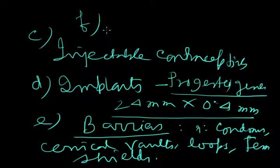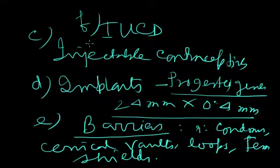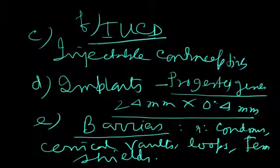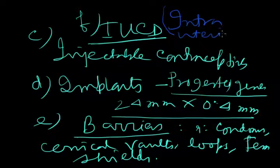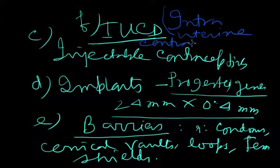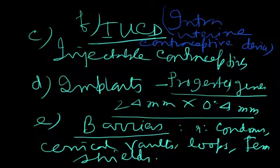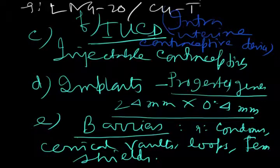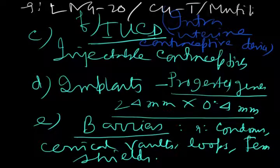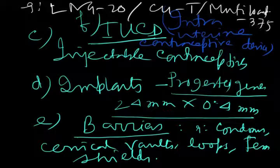In addition, we have another structure which is IUCD, intrauterine contraceptive device. Several examples within this category include LNG-20, Copper T, Multiload 375.